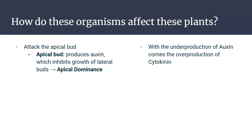These organisms attack the apical bud, which may also be called the shoot apical meristem, and is responsible for producing auxin and the process called apical dominance. Apical dominance is a phenomenon where the main central stem of the plant grows more strongly than other lateral stems by inhibiting their growth. This is done through auxin.